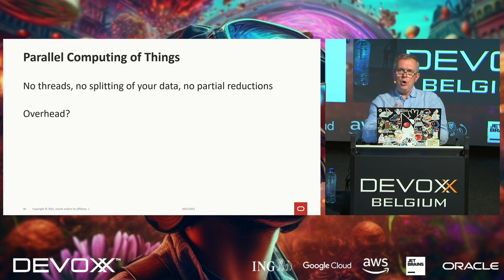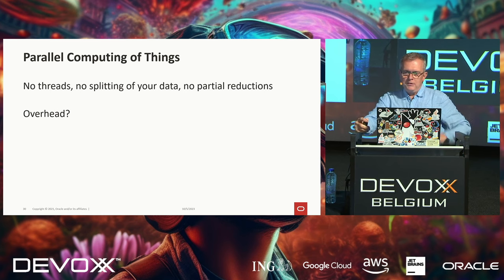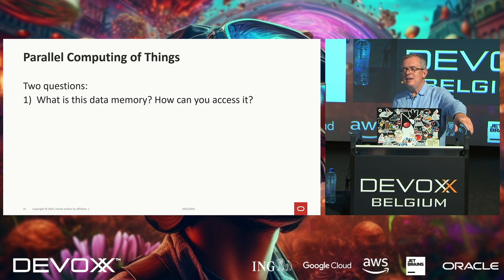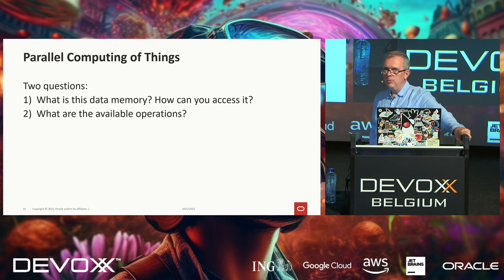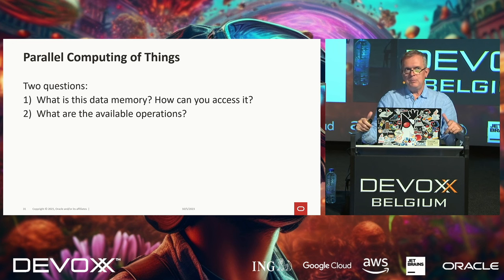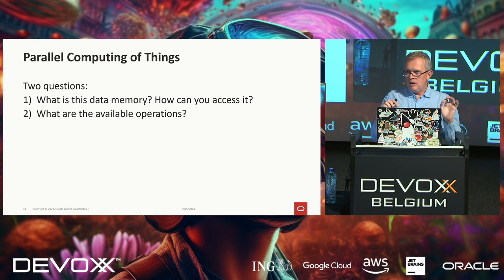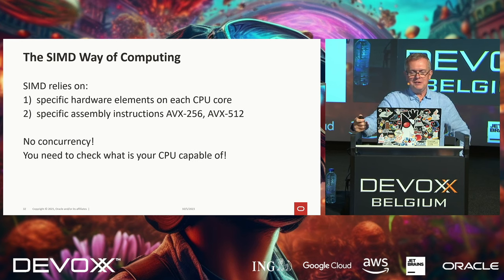The overhead is the loading of data from main memory or cache into the specific SIMD vector memory, and if you want to use that data in regular code, you need to unload it back into an array. Two questions arise: what is this vector memory, and what operations are available? This is key to understanding how the Vector API was designed, because this API really sticks to the hardware. Java is 'write once, run anywhere'; the Vector API is 'write once and try to run as best as I can on every CPU.'